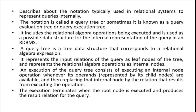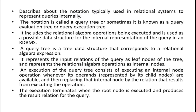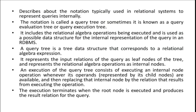Execution of the query tree consists of executing an internal node operation whenever its operands are available, then replacing the internal node by the relation that results from executing the operation. The internal nodes will be executed first, moving upward to the root node. Lastly, the execution terminates when the root node is executed and produces the final result of the query.